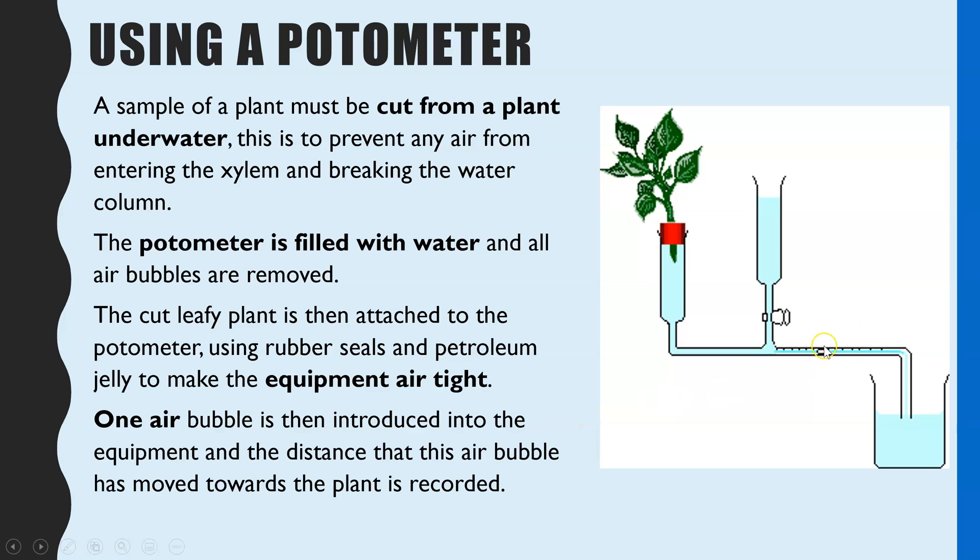The final thing in terms of the setup is one single bubble does have to deliberately be introduced. The way that is introduced is at this end here. This capillary tube will be lifted out of the water probably for about five to ten seconds and then placed back into the water. That five to ten second gap will be enough time for some air to be drawn in to create that one air bubble. The point of that is when that air bubble reaches zero on the scale on your capillary tube, you can then start your stopwatch. Then you can see how far that air bubble travels in a certain period of time. These measurements are used for you to see how much water is taken up.